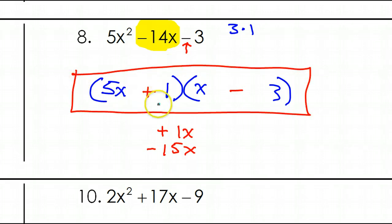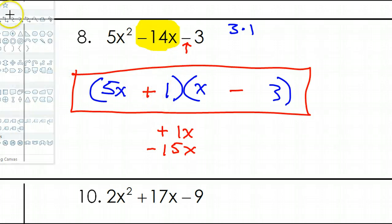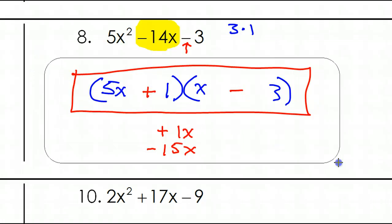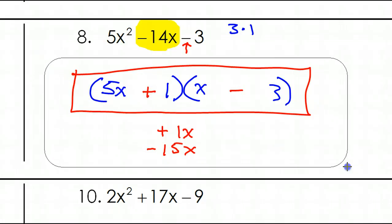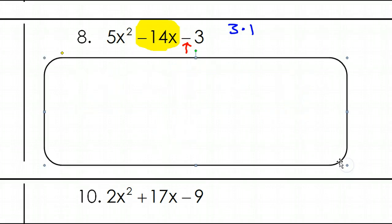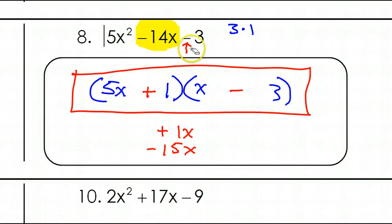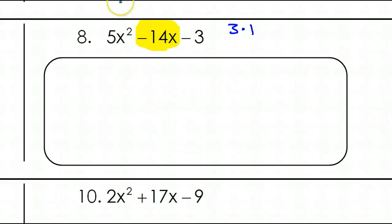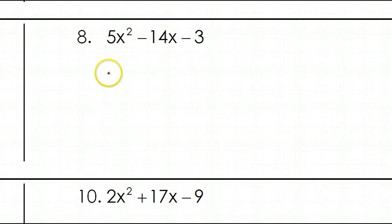However, I want to show you real quick how you would know. We were lucky. We chose the right way first. But, what if we had chosen the other way? How would we know that it was wrong? I'm going to show you that real quick right now. What if we had chosen the other way? So we had 5x times x.